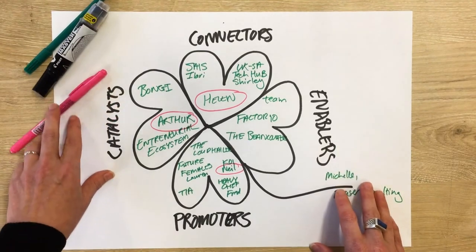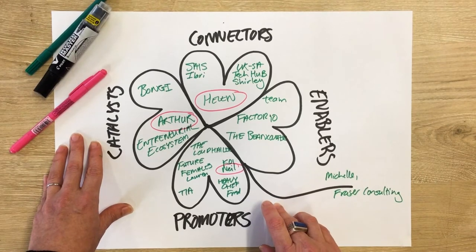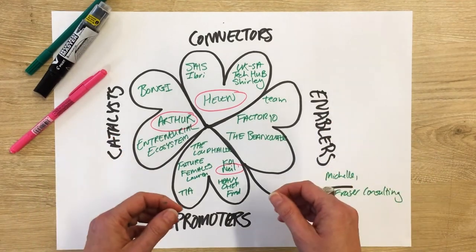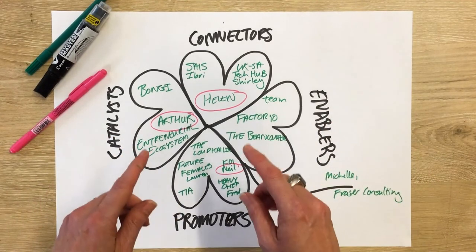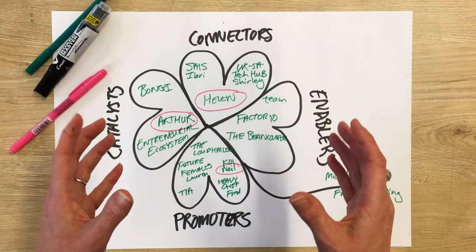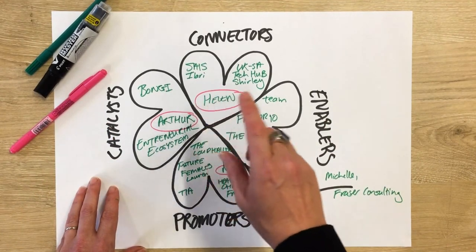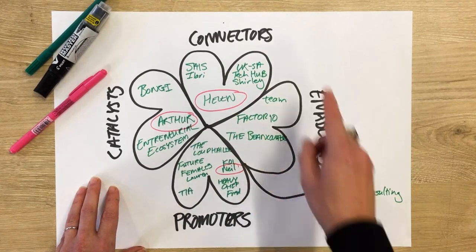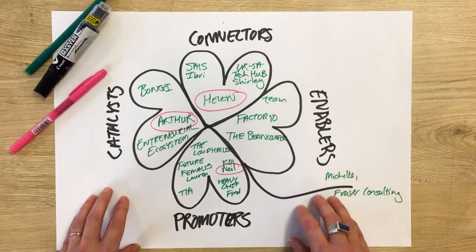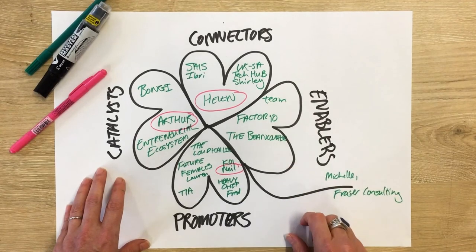Another thing to reflect on is whether you've found one of the cloverleafs particularly difficult to fill. If you're short of connectors, you'll find it hard to rally the resources you need to execute on your idea. Or if you struggle to think of promoters, you'll find it difficult to reach scale because you won't have enough supporters. This means you need to go out and actively find connectors and promoters — try asking people in your existing network to introduce you to new connections. You'll be surprised at how many people can help you. So start mapping your Crowd Clover now.